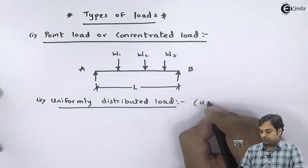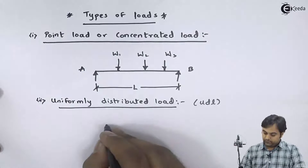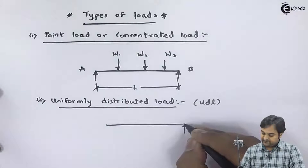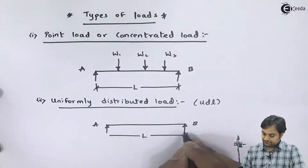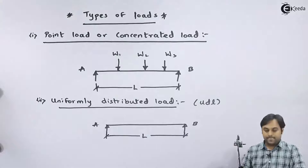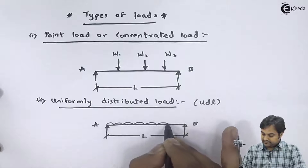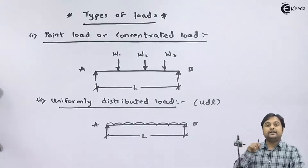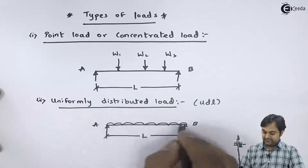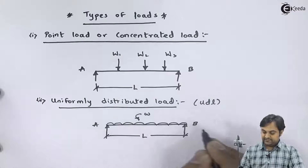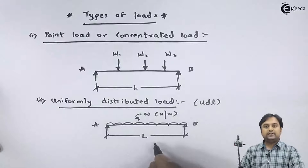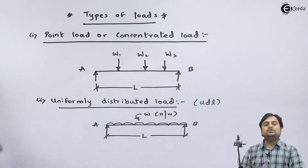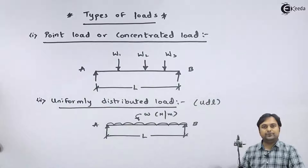Next is uniformly distributed load, also denoted as UDL. If we have a simply supported beam AB having length L, a uniformly distributed load acts throughout the length of the beam. It is not acting at one particular point like a concentrated load. Its intensity is given as W in Newton per meter. We never use UDL in problems as-is — we convert it into a point load, which I will explain when we get into the problems.